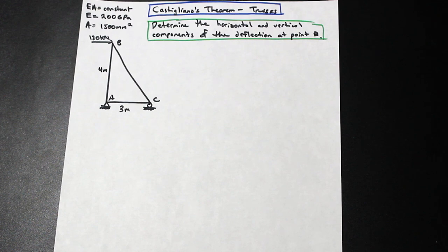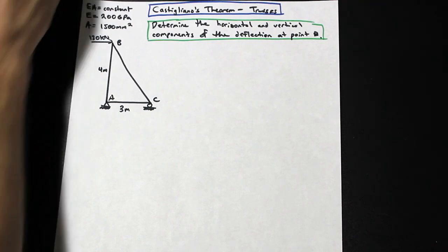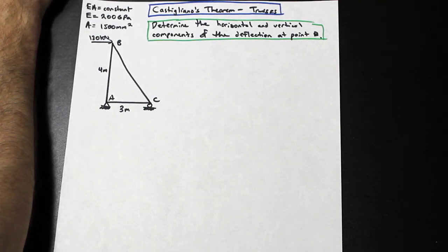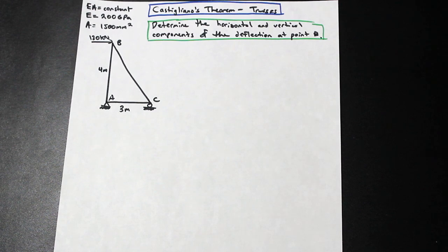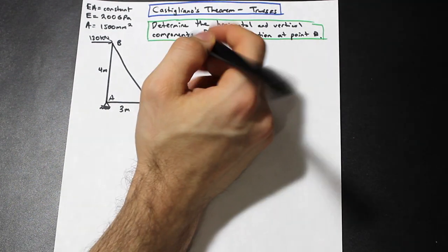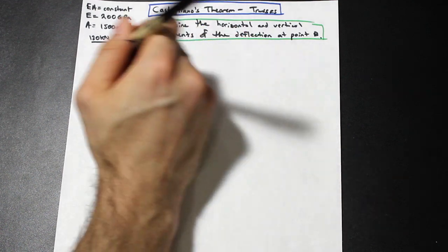Let's go over the formula for Castigliano's Theorem for trusses first — it's a pretty straightforward derivation. I don't usually do derivations but I like to do it for this method because some professors don't explain it that well. The formula we need to look at first is the formula for strain energy, because Castigliano's Theorem is a work-energy method.